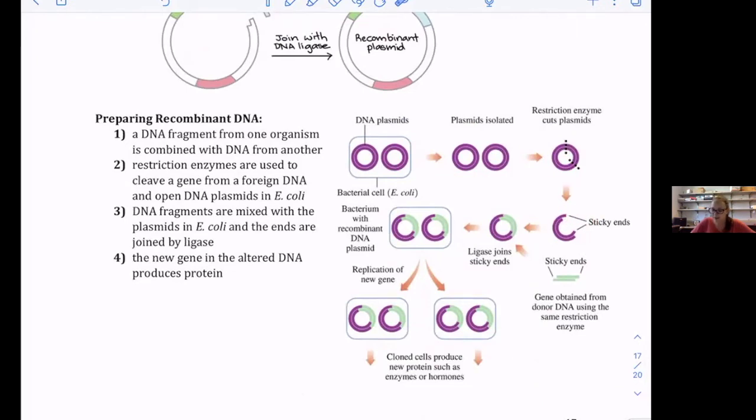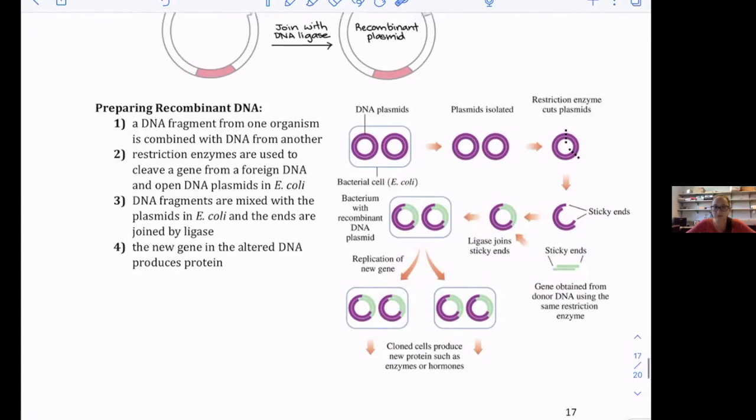The sticky ends of your plasmid and your gene from whichever DNA you're getting it from combine and make this new recombinant plasmid. This plasmid can be replicated over and over. Then that green portion can be used as code to produce whatever protein you're trying to make.